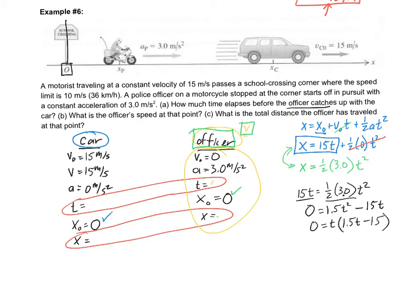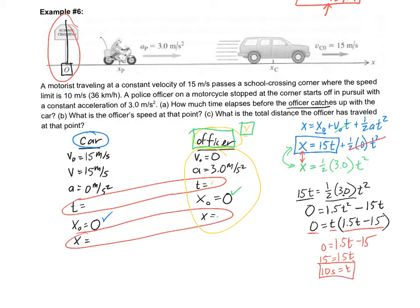This gives two solutions: t = 0, which we already knew — they were at the same position at the start. The other solution comes from 1.5t − 15 = 0, so 1.5t = 15, and dividing both sides by 1.5 gives t = 10 seconds. That's part (a): the officer catches up after 10 seconds.